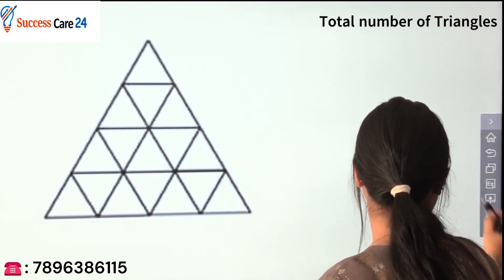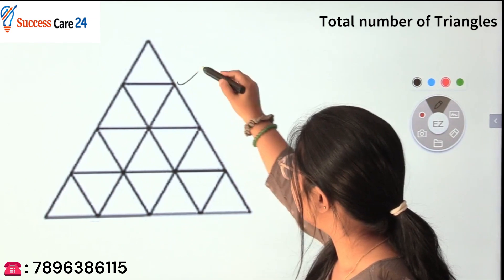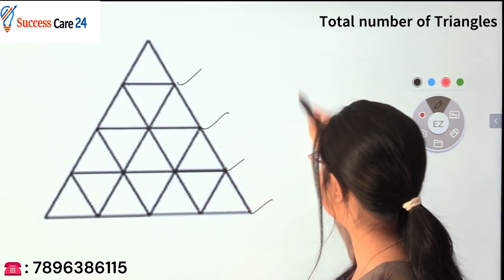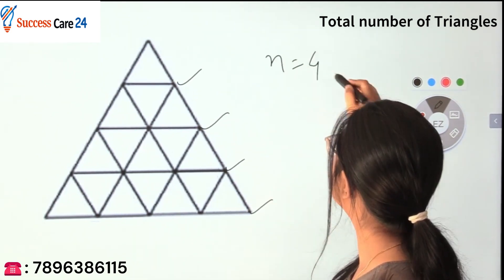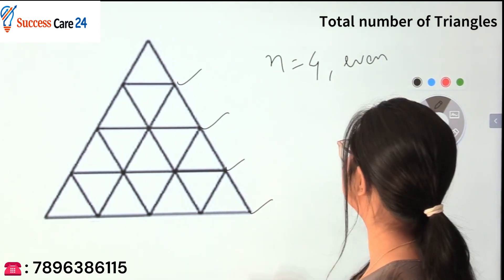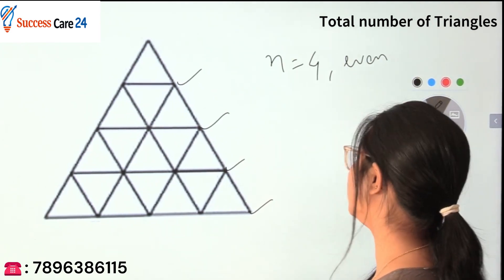Let's count: 1, 2, 3, and 4. That means n is equal to 4, which is an even number. Now you have a formula for this.